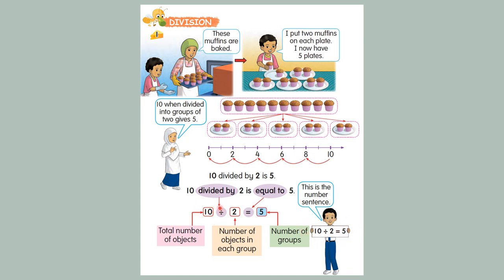Untuk nombor di depan ini membawa masuk jumlah nombor kesemuanya. Maksudnya jumlah nombor kesemuanya, jumlah objek tersebut. Dan untuk nombor 2 ini, membawa masuk berapa benda dalam satu kumpulan. Satu kumpulan ini ada 2. Jadi tulis 2. Dan nombor belakang ini adalah berapa kumpulan kesemuanya.